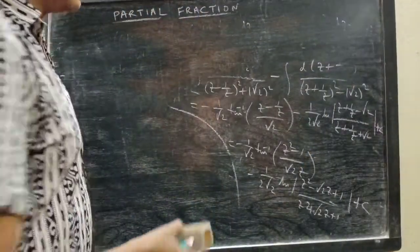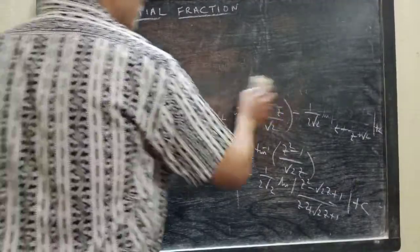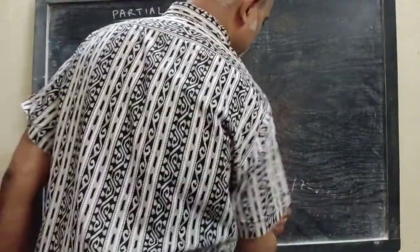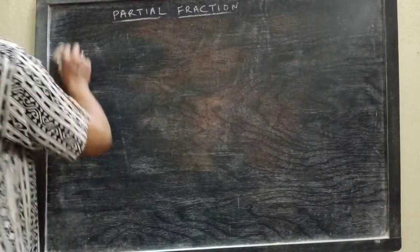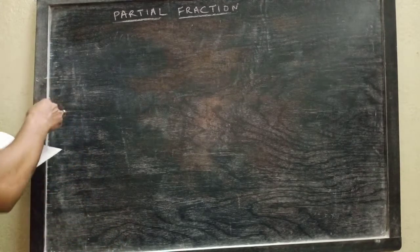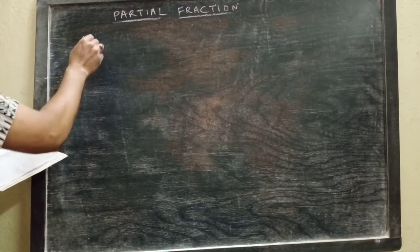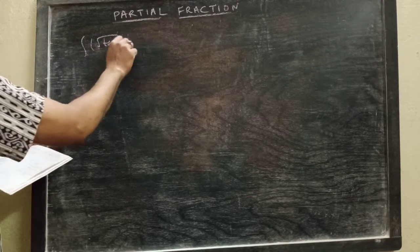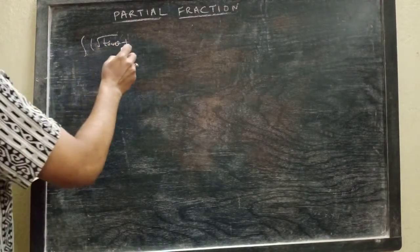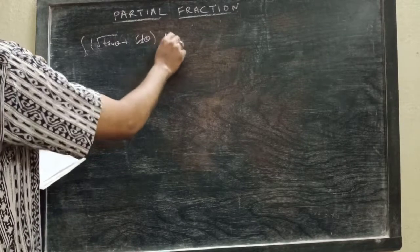The remaining simplification with cot θ is left as homework for you. Next, let us do integration of √(tan θ) + √(cot θ) dθ.